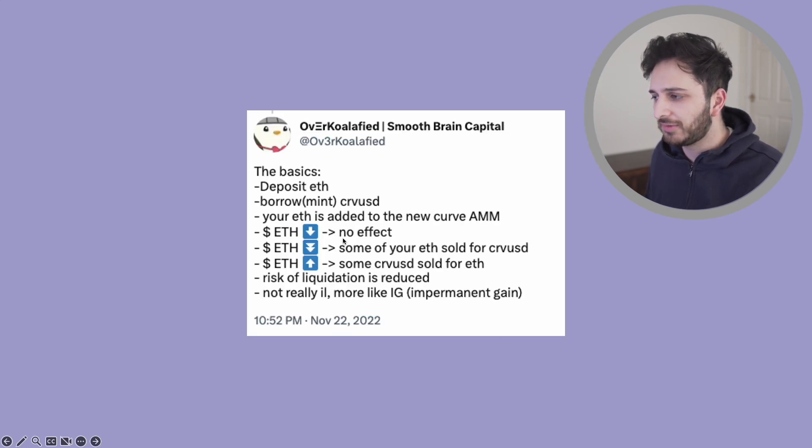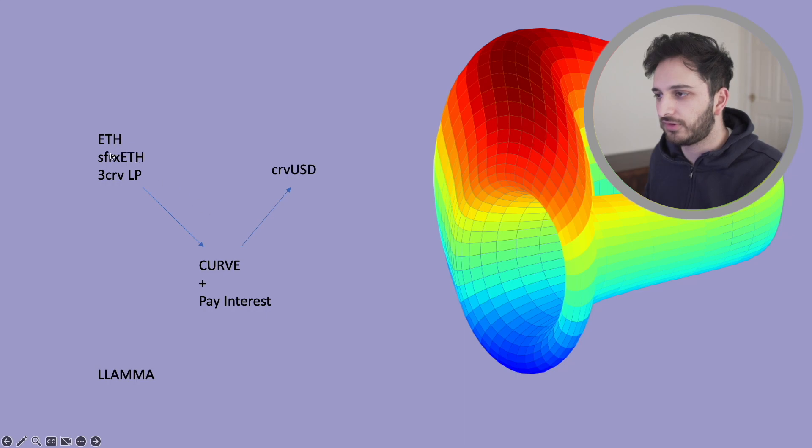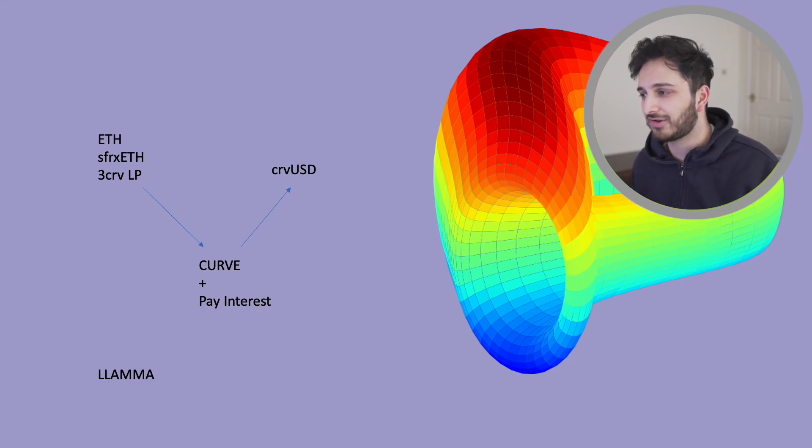so what happens if the price of your ETH or your collateral goes down? Well, obviously, if it goes down quite significantly, you've got a big chance of getting liquidated. And that's what happens with some of these other stable coins. Price goes down below liquidation price. You're liquidated. You don't even have a chance. You might have to be up all night just trying to monitor your position if things are not going too well.